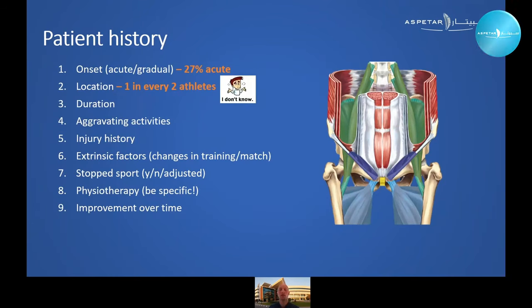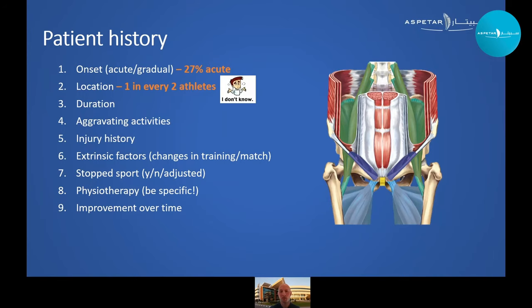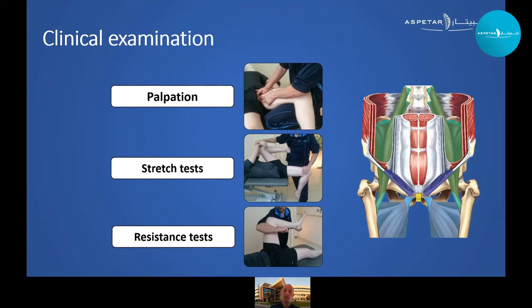During patient history, a thorough history is important — you need to discuss onset. In long-standing groin pain, not all injuries start gradually; in our cohort, one in every four cases started with an acute onset but became long-standing over time. Asking for pain location can provide important information, although one in every two athletes in our cohort was unable to reproduce their pain by palpation themselves. All other factors visible on this slide are important during history taking, both for diagnosis and management.